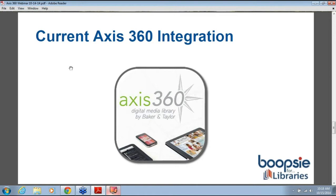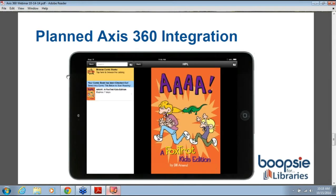So that is our brand new and current Access360 integration. It works just in your mobile app — you can search the database in your mobile app, check out titles, and go directly to the Access Reader. We also have a planned integration which will be even more in-depth. If you're familiar with our Comics Plus Library Edition service, this is a browser-based embedded reader right in the app, so you never actually have to download anything additional. You can do everything within your library mobile app.